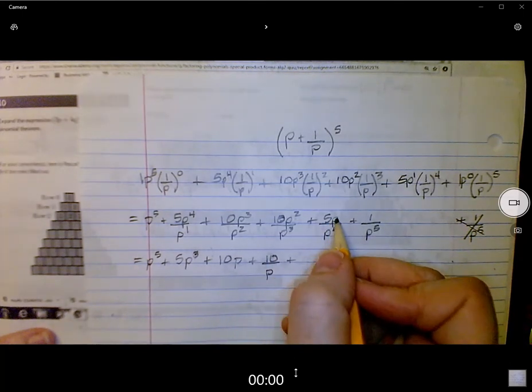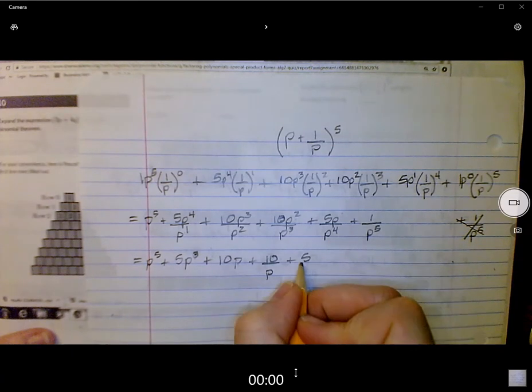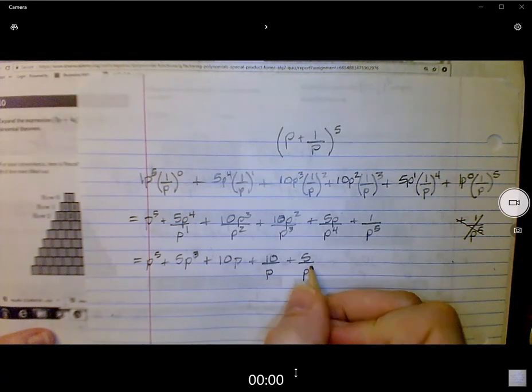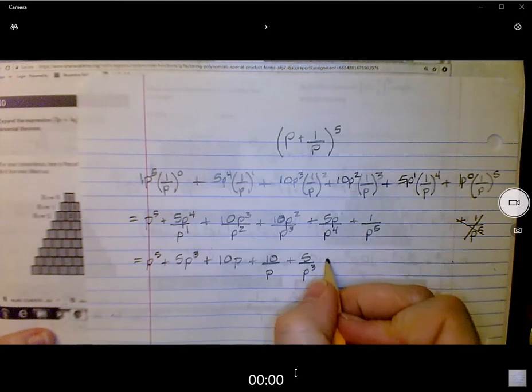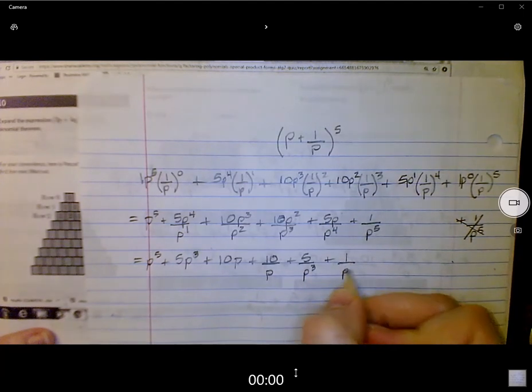And then we've got 5 to the P to the 1 minus 4, so we have a 5. P to the 1 minus 4 is going to be P to the negative 3. So we'll just say P to the 3, plus our final term, which is 1 over P to the fifth.